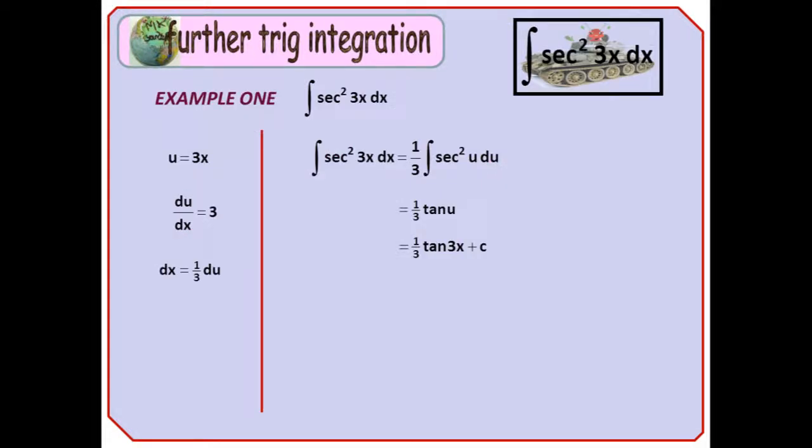Let's start with example 1, the fairly trivial integral of sec squared 3x. Remember that the integral of sec squared x is tan x, so we're going to substitute for the 3x. I like to use the letter u, so I'm putting u equal 3x.